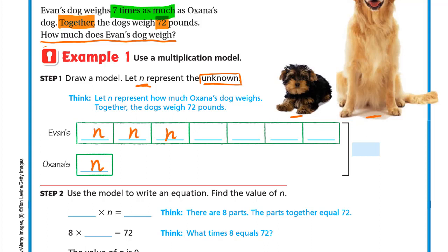So we draw N, N, N, N, N, N, N — that's 7 Ns. The question says together the dogs weigh 72 pounds. So together the 7 Ns and the 1 N are 72 pounds. Even's dog is 7 Ns and Oxana's dog is 1 N, and together they weigh 72 pounds.